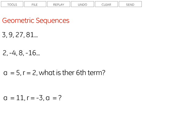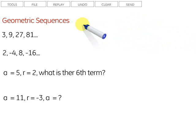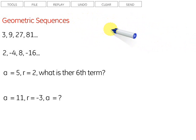Let's take a look at geometric sequences. Geometric sequences are closely related to arithmetic sequences, except that rather than adding the same thing to get from one term to the next, we multiply by the same thing in a geometric sequence to get from one term to the next.